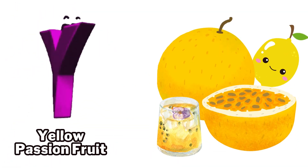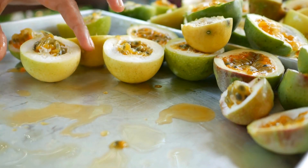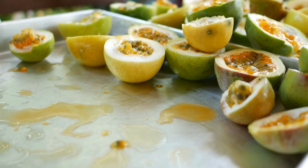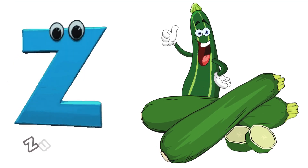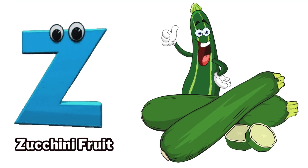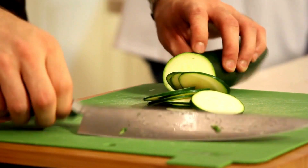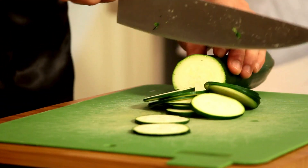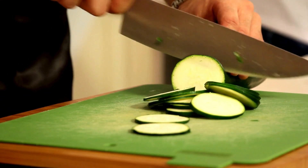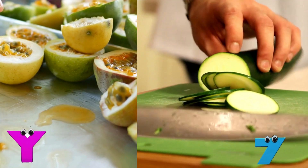Y is for yellow passion fruit, y-y-yellow passion fruit. Z is for zucchini fruit, z-z-zucchini fruit.